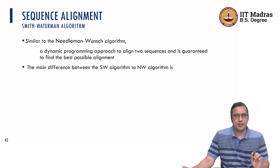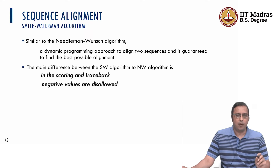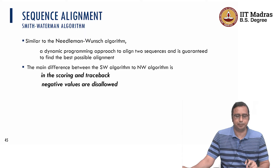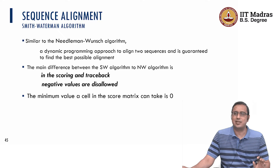But there are subtle differences between the Smith-Waterman algorithm and the Needleman-Wunsch algorithm. One difference is in the scoring and the traceback. In the scoring, negative values are not allowed — that is a peculiarity of Smith-Waterman. That is why the minimum value in a cell of the scoring matrix is 0.